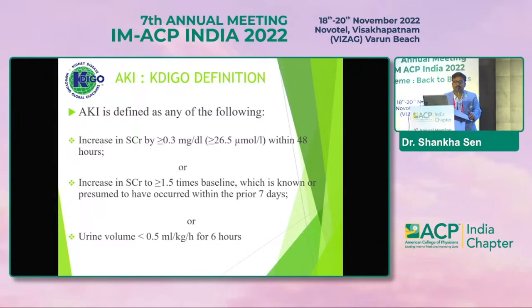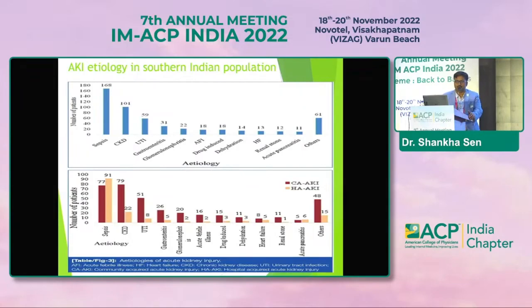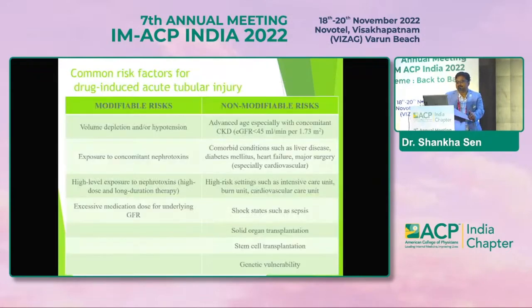If urine volume is less than 0.5 ml/kg/hour for the last 6 hours, that also qualifies. We have to pick it up early and treat it early. Regarding community-acquired AKI and hospital-acquired AKI, the numbers are huge. Sepsis leads, then background CKD — which you should keep in mind when thinking about the severity of AKI.